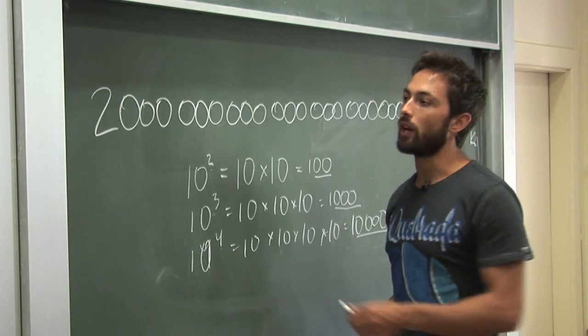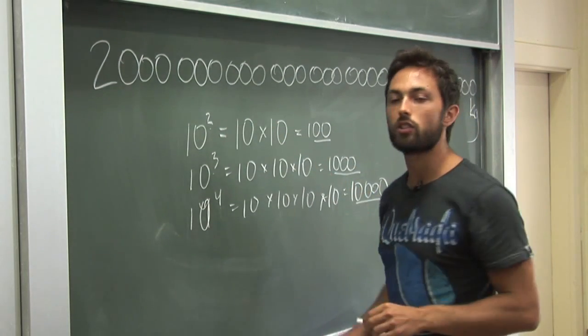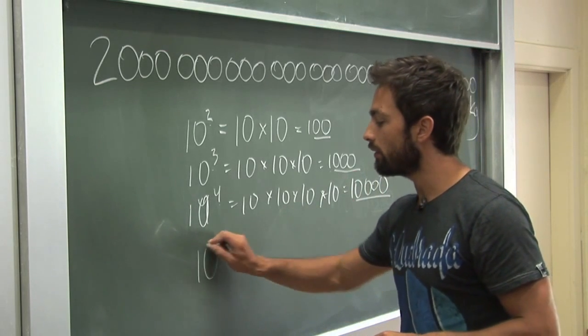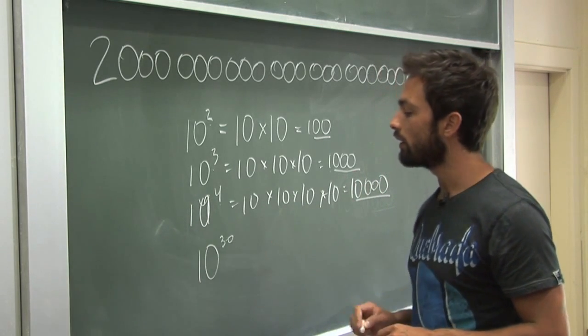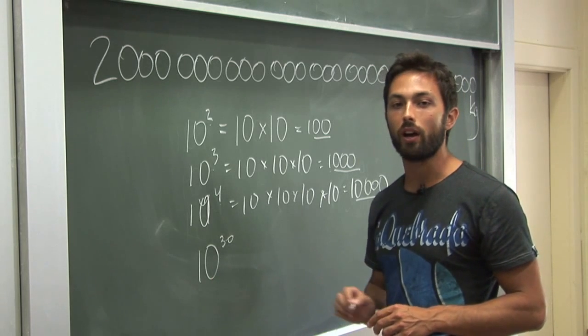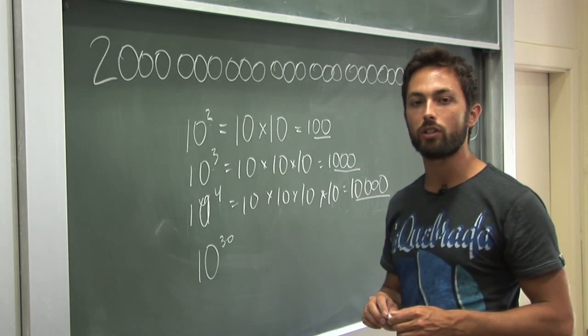So if we wanted to represent the mass of the sun in scientific notation, we would need 30 zeros. So we represent that using 10 to the power of 30. This means we're multiplying 10 by itself 30 times, which gives us a 1 followed by 30 zeros.